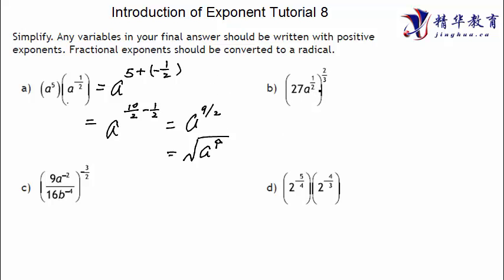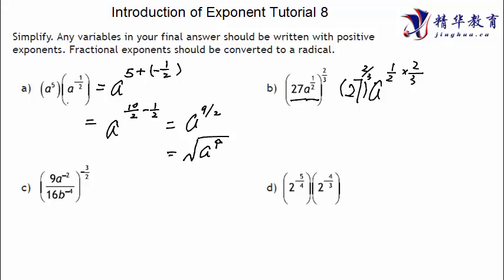Next question. A lot of students see 27 and eight to the power of one half, then apply two over three only to those terms and call it done. Don't do that — the two over three applies to all terms including 27. So 27 must also be raised to the two over three.